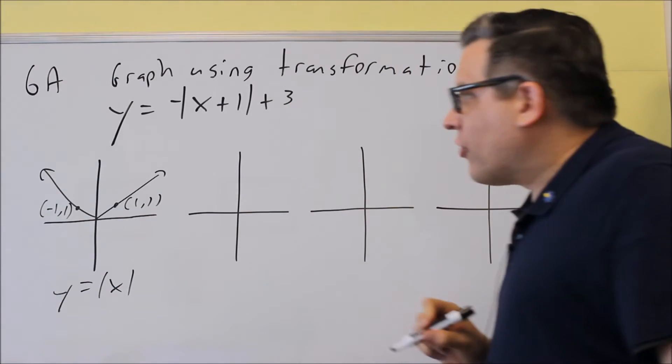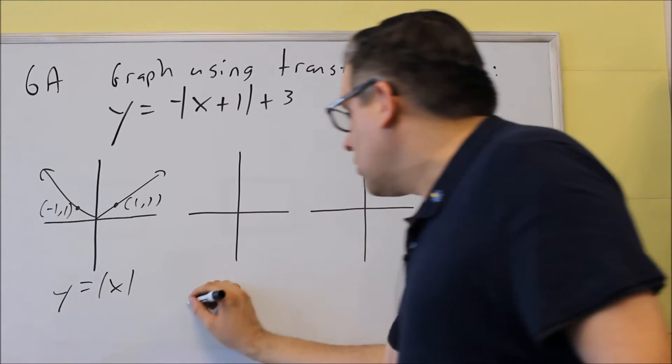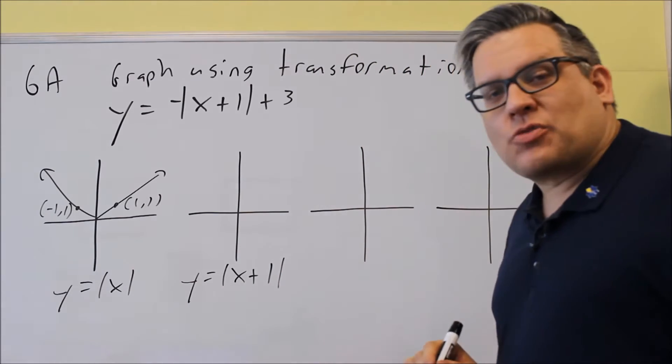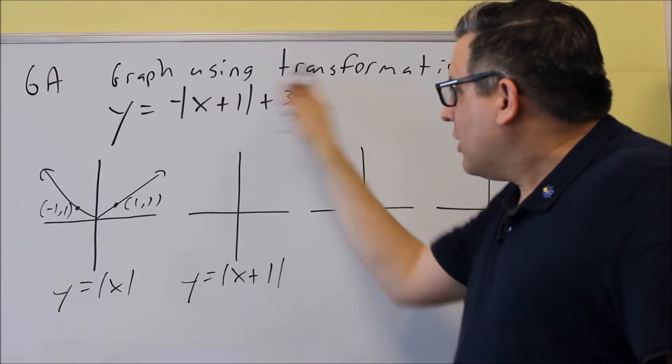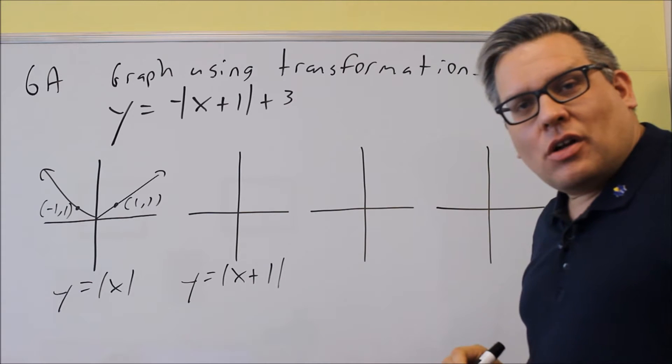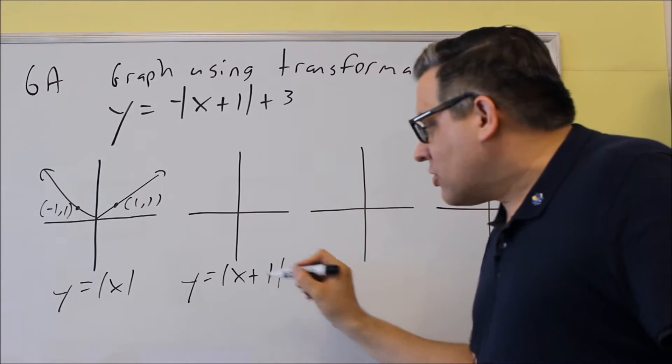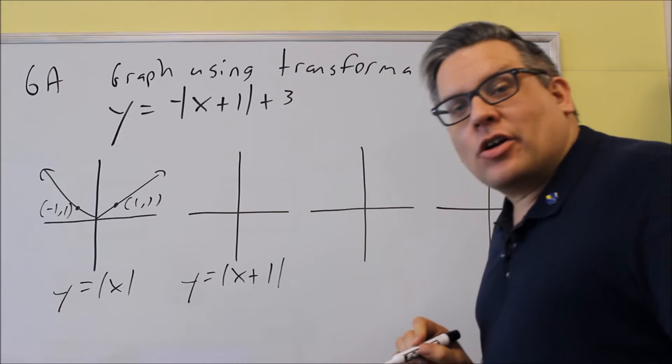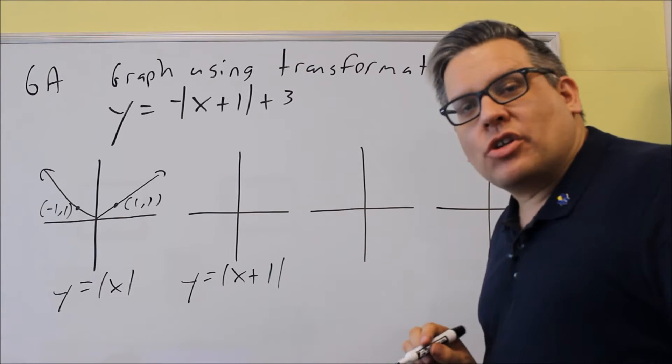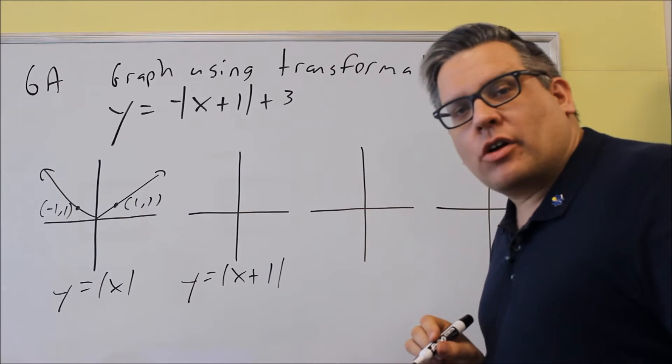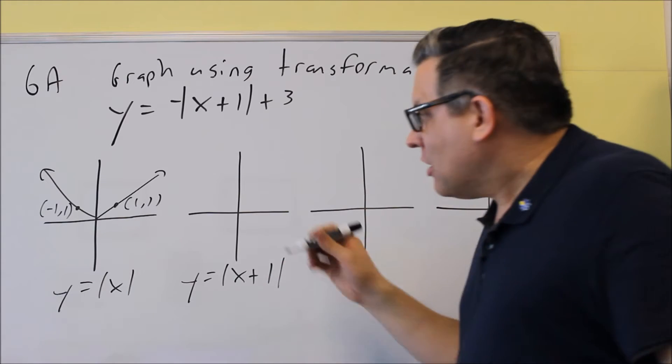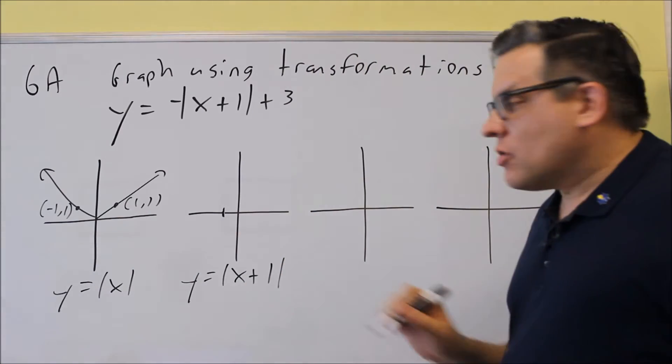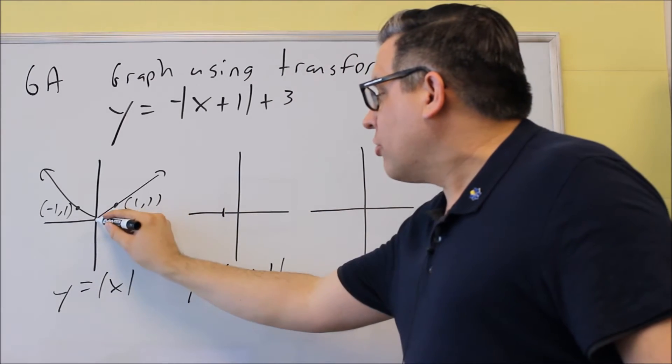What I'm going to do first is look at absolute value of x plus 1. I'm not going to include everything else, just going to do this. Now what that's going to do with transformations is you always move the graph opposite direction from what you see inside. So there's a plus 1 there, instead of moving it to the right, I'm going to move it one place over to the left.